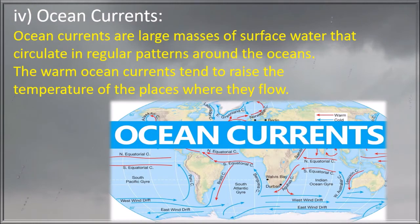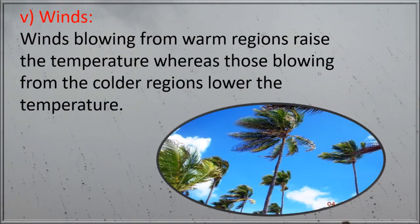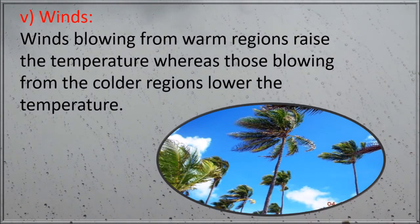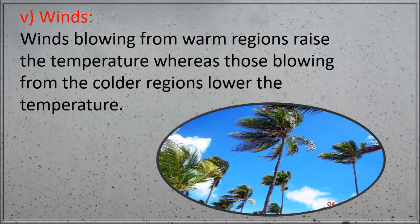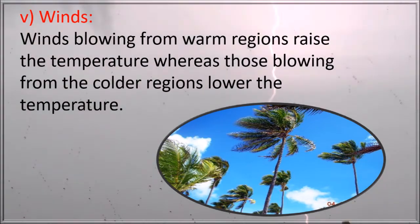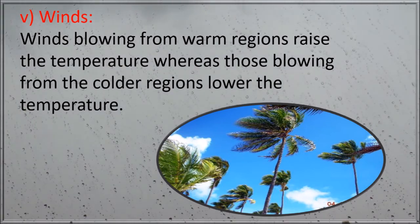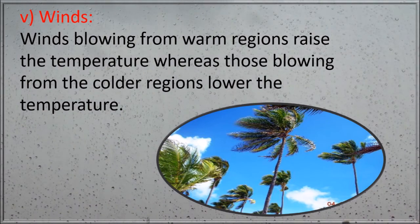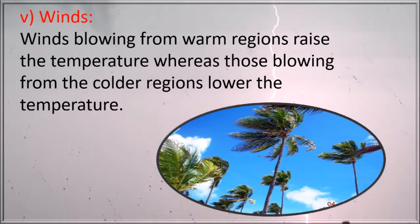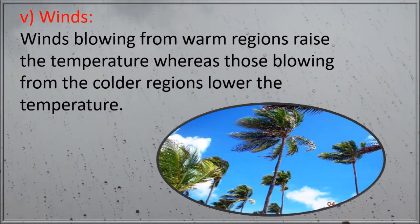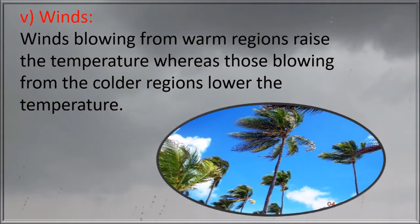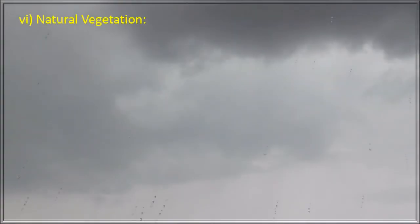The fifth factor is winds. Winds blowing from warm regions raise the temperature, whereas those blowing from colder regions lower the temperature. For example, in the plains of Northern India, very hot and dry winds blow from the hot desert areas of Rajasthan in summer in the afternoons. These winds, called loo, raise the temperature and cause severe heat waves.